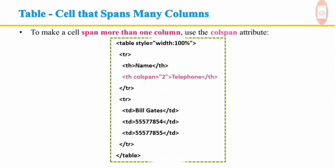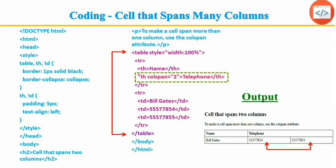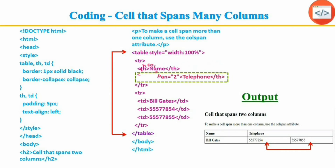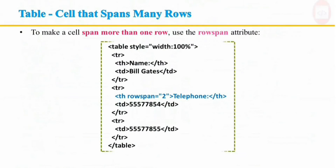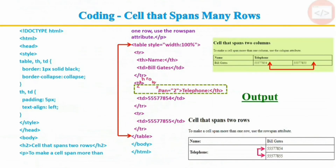The colspan attribute in HTML specifies the number of columns a cell should span. It allows a single table cell to span the width of more than one cell or column, providing the same functionality as merge cell in spreadsheet programs like Excel. It can be used with TD and TH elements. The value must be an integer. The rowspan attribute in HTML specifies the number of rows a cell should span. It allows a single table cell to span the height of more than one cell or row. For example, if the row span value is set to 2, the cell will take up the space of 2 rows in the table.